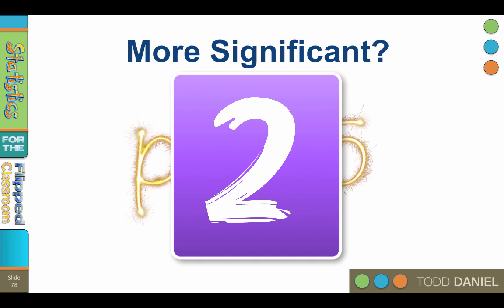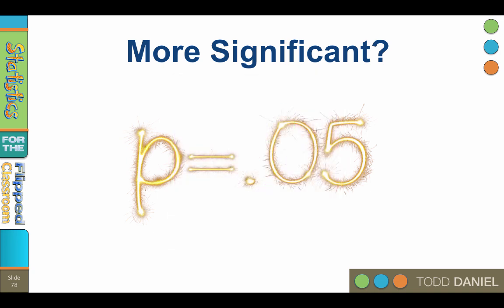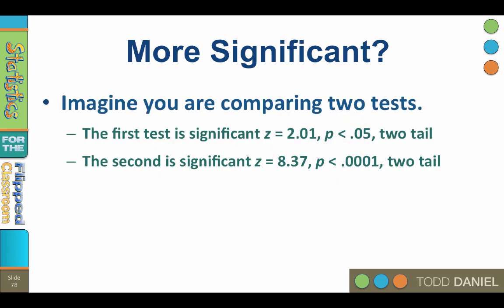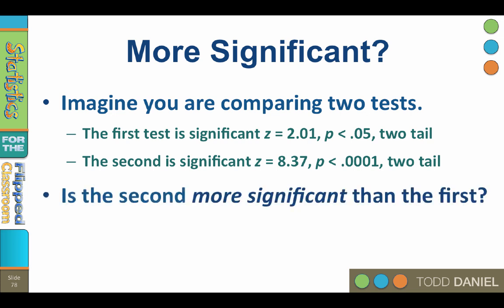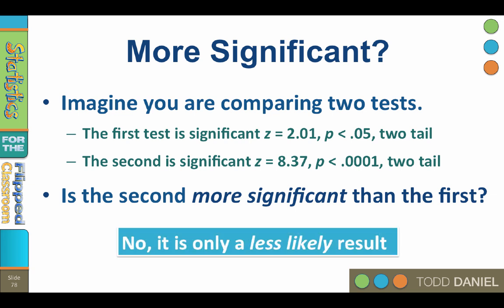Number two, there is no such thing as more significant. There is no qualifier for significance. Just like you can't be mostly pregnant or partly dead. Differences are either significant or they are not. So imagine that you are comparing two tests. The first test is significant at a Z of 2.01, P less than 0.05, two-tailed test. The second is significant at Z of 8.37, P less than 0.0001, two-tailed test. Is the second test more significant than the first? No, it is only a less likely result. There is no such thing as more significant or almost significant or marginally significant.